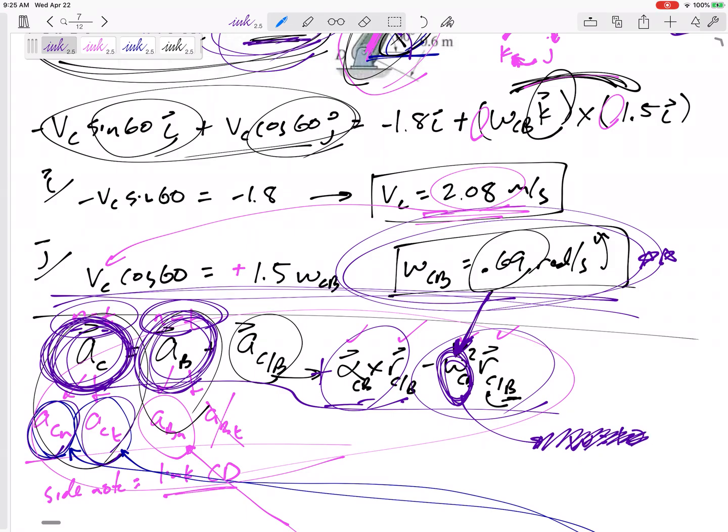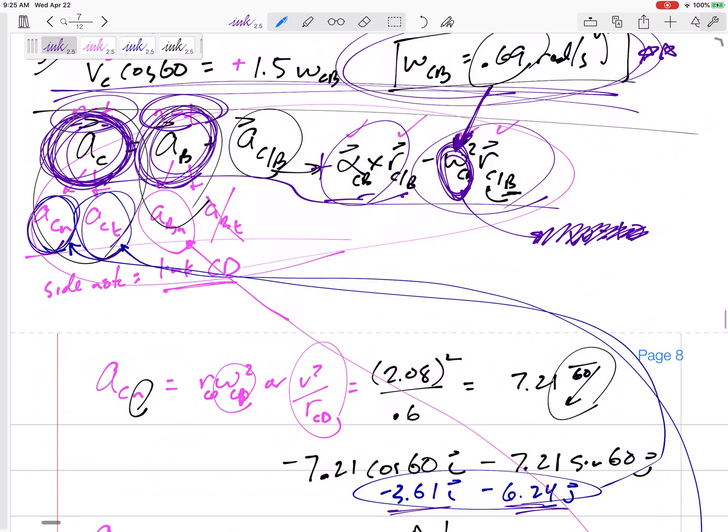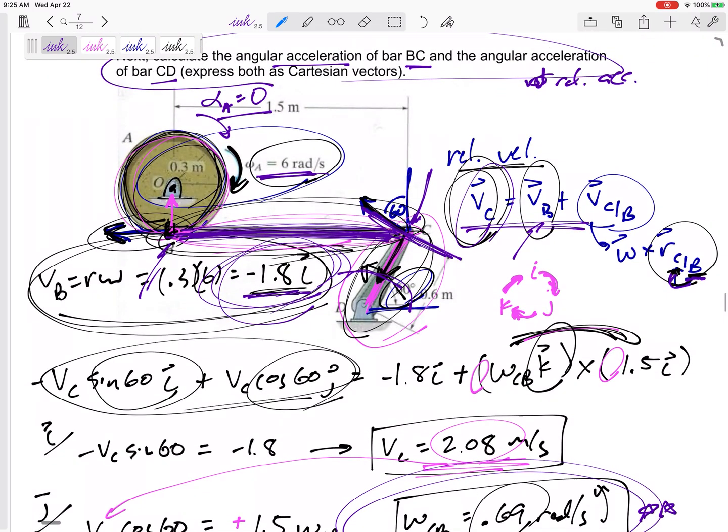So the first half is weighted a certain amount. Second half is weighted a certain amount. And so if you don't show me anything for the second half of the problem, I'm not going to give you any credit for it.